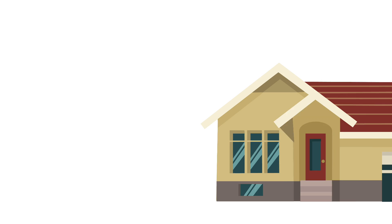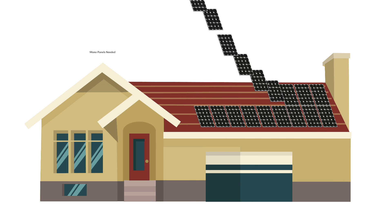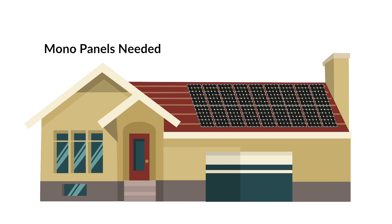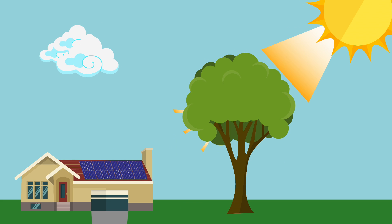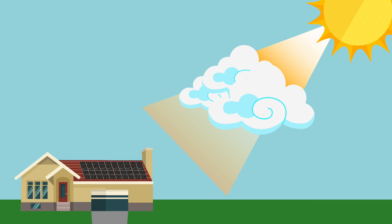Generally speaking, mono panels will take up less space to produce the same amount of power as a system with poly panels. Poly panels can gather more scattered rays, such as in shaded conditions, while mono panels gather more energy in low light, such as clouded conditions.